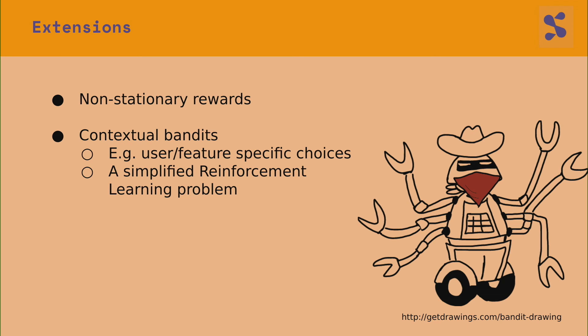There are lots of extensions you can apply. You can have non-stationary rewards. Contextual bandits are very interesting because you might have additional information using features — for example, if you're serving websites, your user features might be important. That's it.